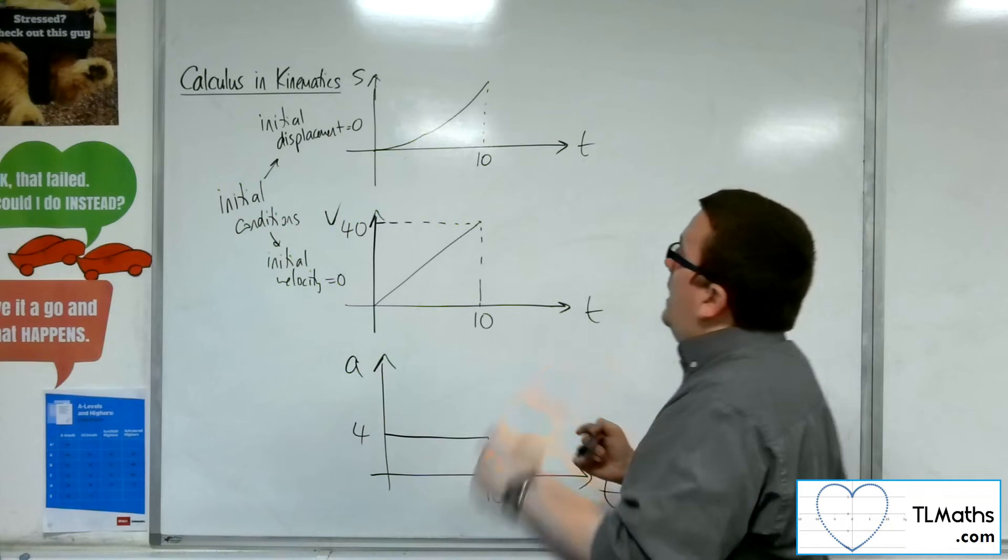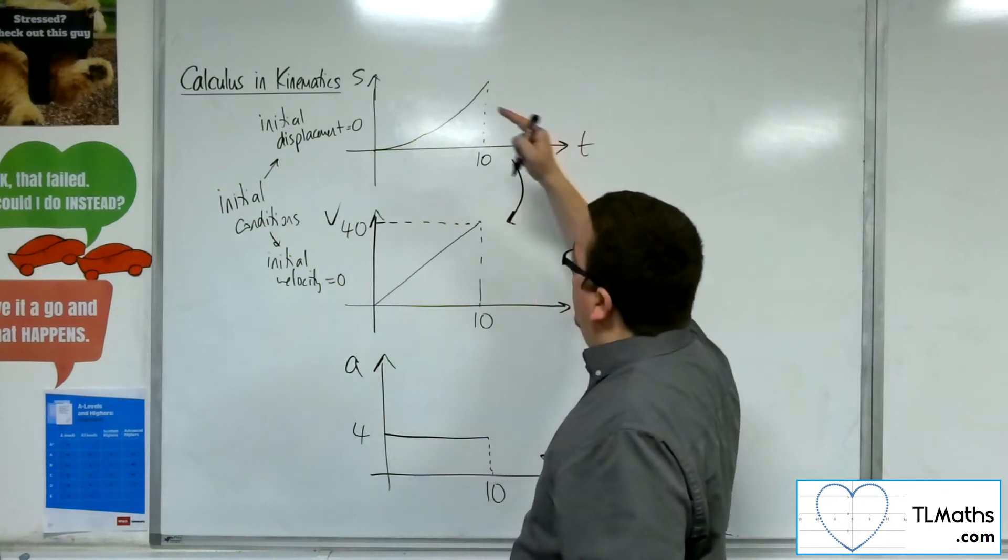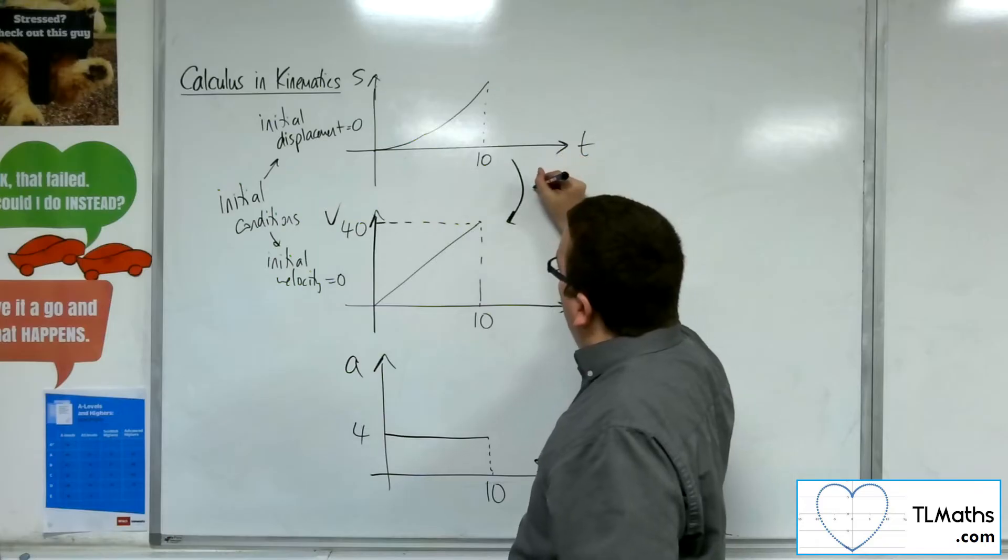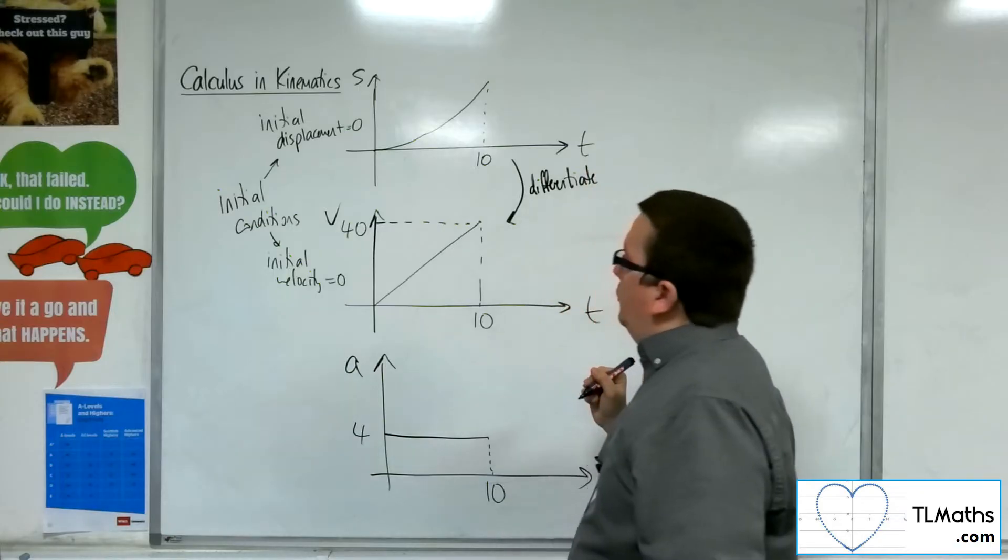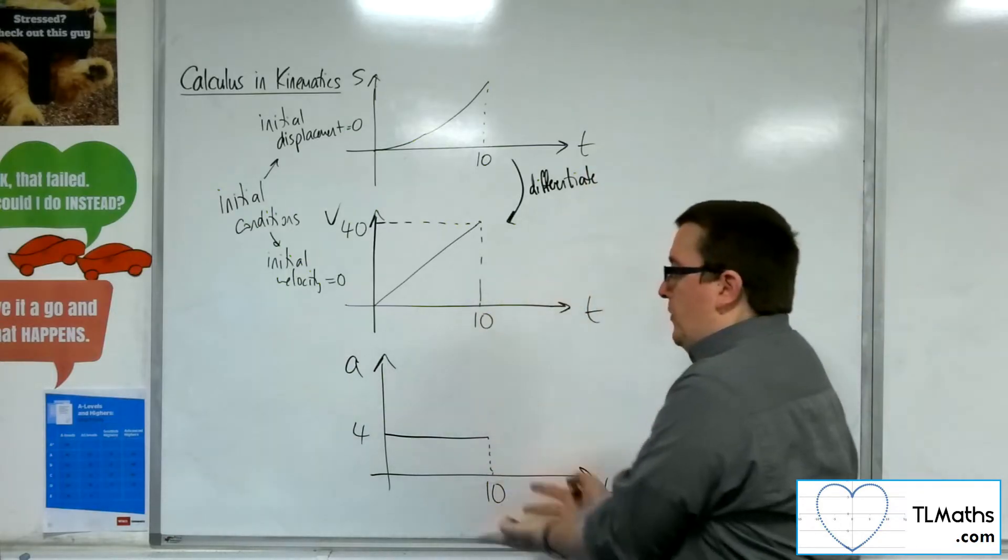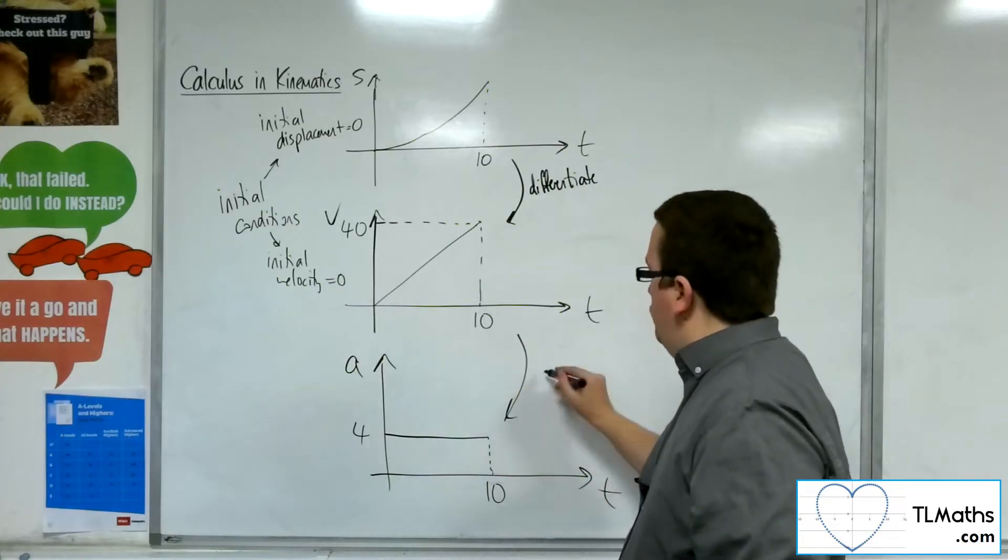So it doesn't take much guessing that in order to go from displacement down to velocity, I'm going to have to differentiate. And subsequently, if I'm going from velocity down to acceleration, I'm finding the gradient of that line, I can then differentiate again.